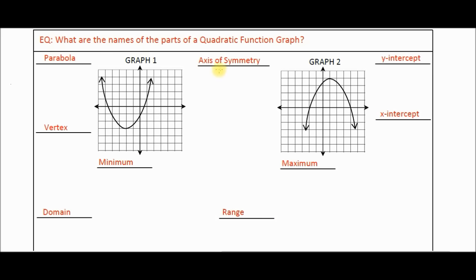The terms are: parabola, axis of symmetry, y-intercept, vertex, minimum, maximum, x-intercept, domain, and range. Fill those out. When you're done filling those out, start the video back up again and we'll start talking about what these different names or words mean.